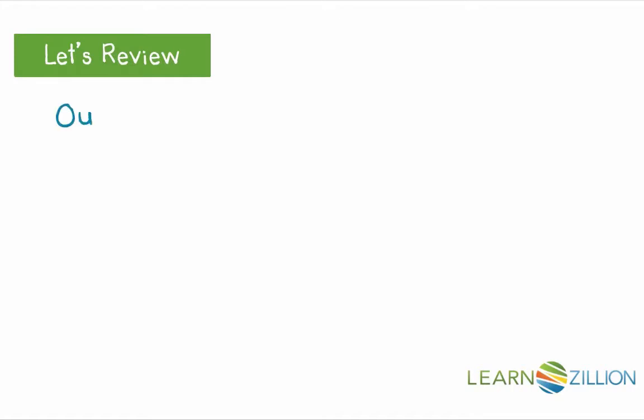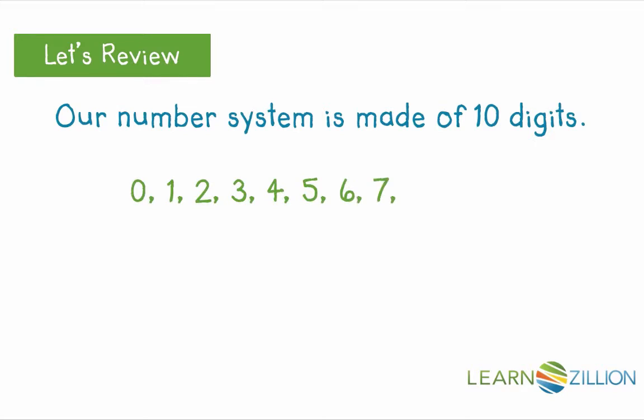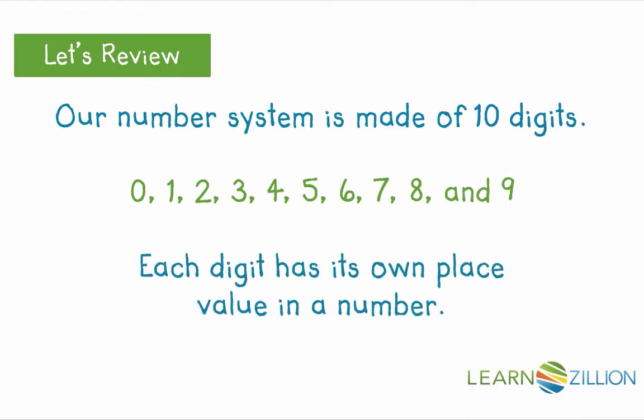Let's review. Our number system is made of 10 digits: 0, 1, 2, 3, 4, 5, 6, 7, 8, and 9. Each digit has its own place value in a number.